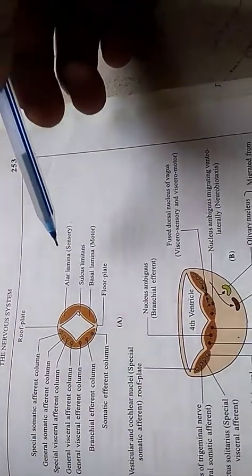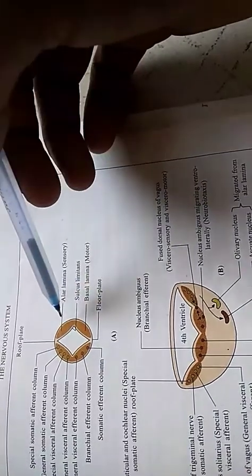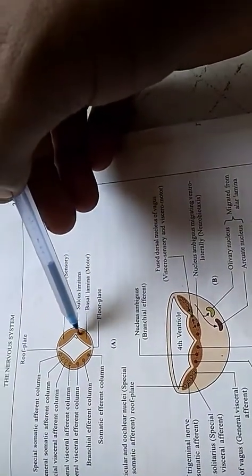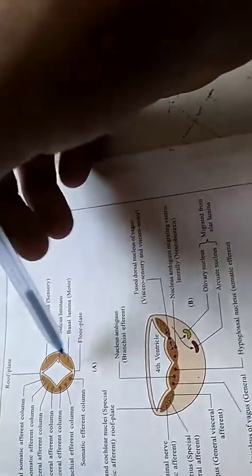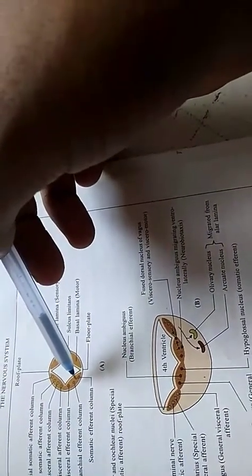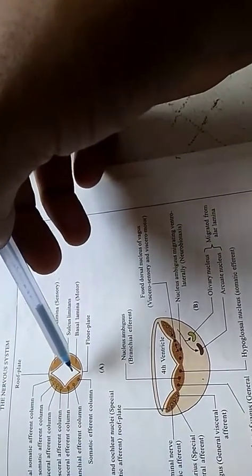The wall of three primitive brain vesicles will be having three layers: the ependymal zone, mantle zone, and marginal zone. The wall of midbrain and hindbrain are divided by sulcus limitans into ventral basal lamina and dorsal alar lamina. The basal lamina contains motor neurons whereas alar lamina contains sensory neurons.